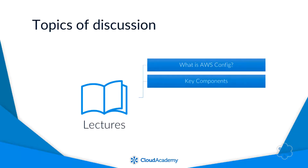Next, we will take a look at key components. This lecture breaks down the service to allow us to look at all the components and their relationship to each other and the role they play as part of the AWS Config service.